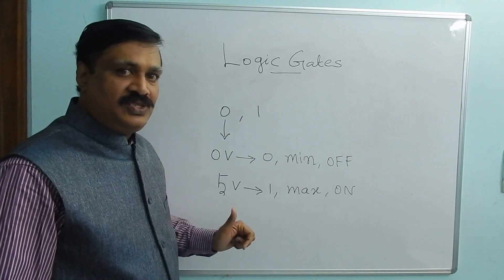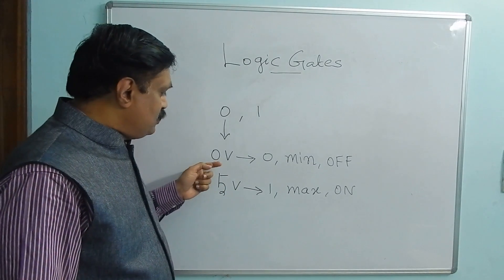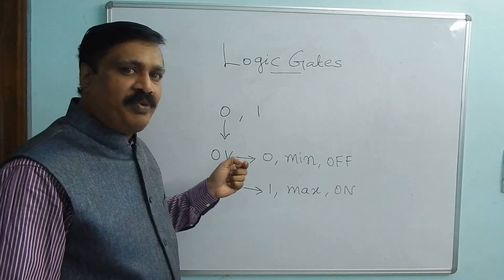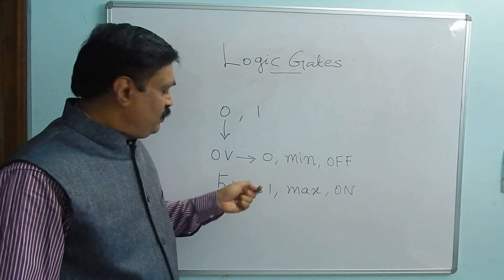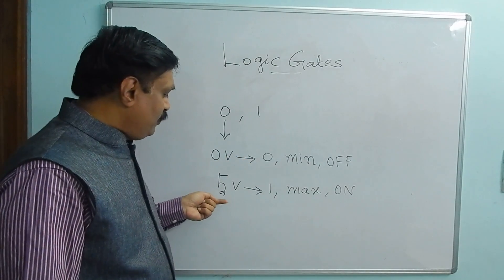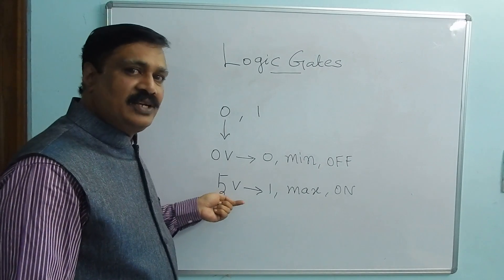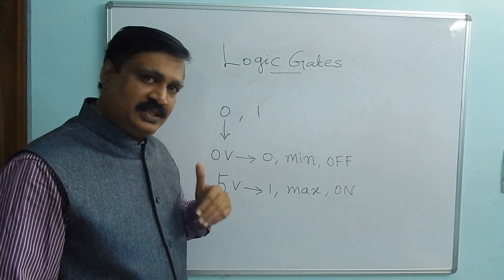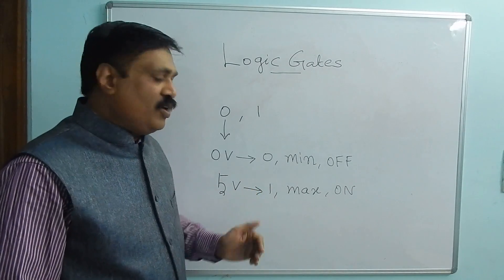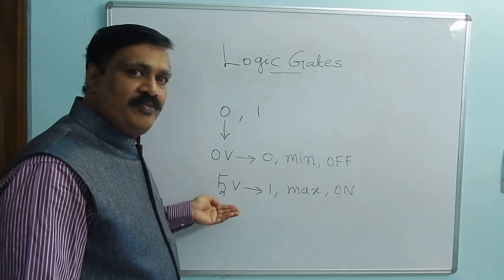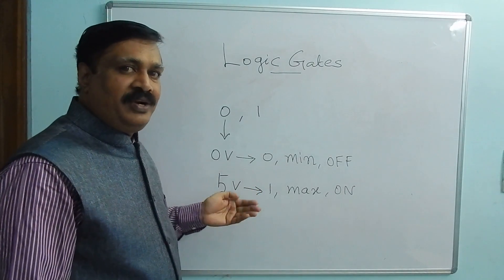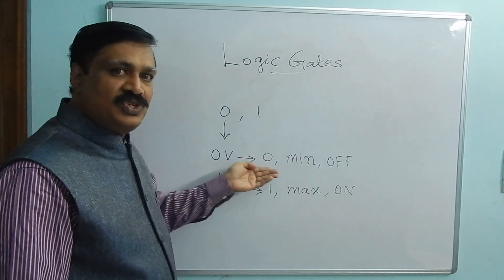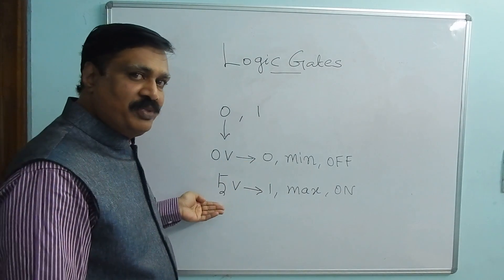In actual circuits, we are giving 0 voltage or a little bit higher — 0.5, 0.6, like this — and 5 voltage or less than 5 voltage. But in modern equipment and circuits, we are giving less than 5. But from the beginning, by convention, 0 volt means 0 and 5 volt means 1.